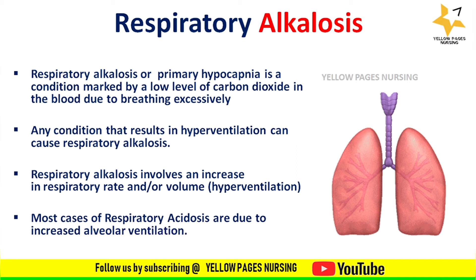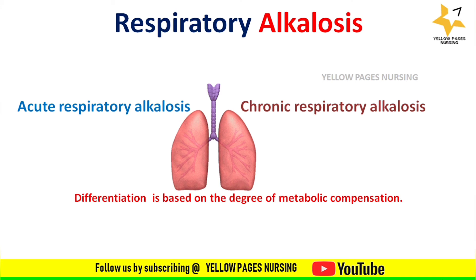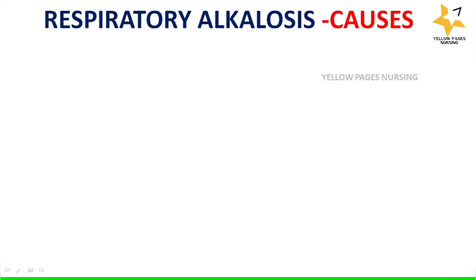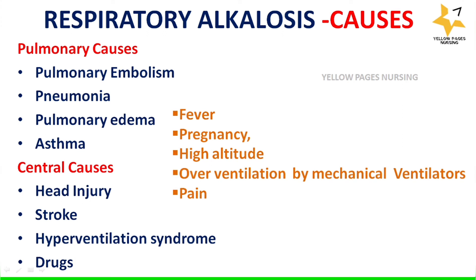The difference between acute and chronic respiratory alkalosis is based on the degree of metabolic compensation. Excess bicarbonate is buffered by extracellular hydrogen ions within minutes, but more significant compensation occurs over two to three days as the kidneys decrease hydrogen ion excretion. Causes of respiratory alkalosis are categorized into pulmonary and central causes. Pulmonary causes include pulmonary embolism, pneumonia, pulmonary edema, and asthma. Central causes include head injury, stroke, hyperventilation syndrome, and drugs like progesterone, methylxanthines, salicylates, catecholamines, and nicotine. Other causes include fever, pregnancy, high altitude, over-ventilation by mechanical ventilators, and pain.